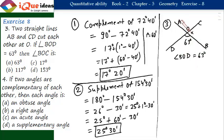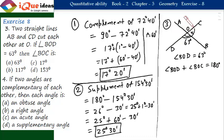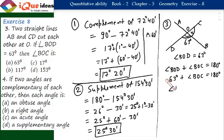Angle BOD plus angle BOC must be equal to 180 degrees because they are angles on the same line — the sum of angles on the same line is 180 degrees, also called a linear pair. They are supplementary. Since angle BOD is 63 degrees, we get 63 degrees plus angle BOC equals 180 degrees. So, angle BOC equals 180 degrees minus 63 degrees, which is 117 degrees.